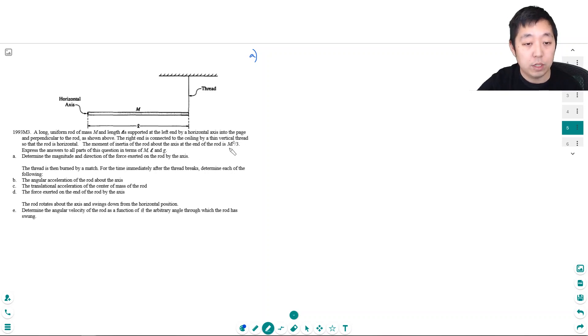The moment of inertia or rotational inertia of the rod about the axis is ml squared over 3. Express all answers in terms of m, l, and g. Determine the magnitude and direction of the force exerted on the rod by the axis.